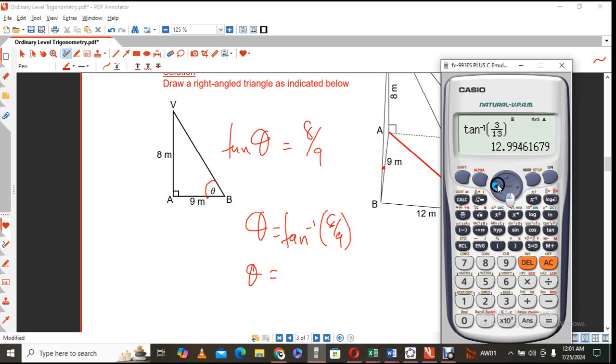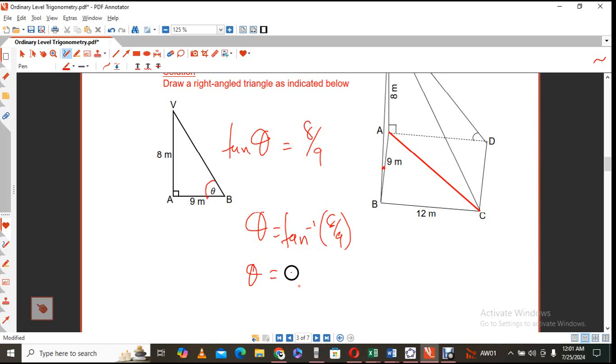So let's grab our calculator again. Since it was still on tangent. This was 9. And I'll go back. And that was 8. So it's 41.633. So it's 41.633 and so on degrees.